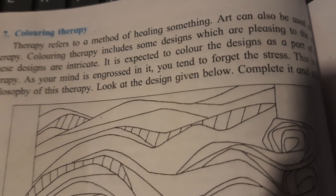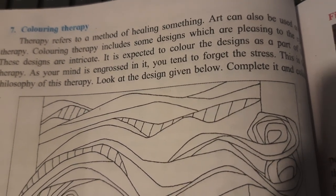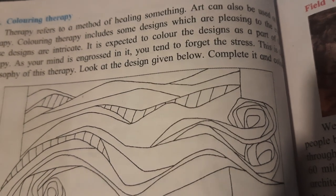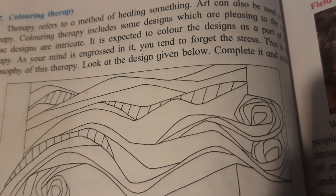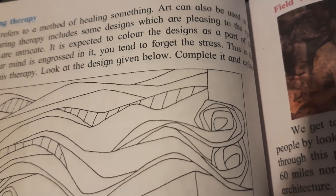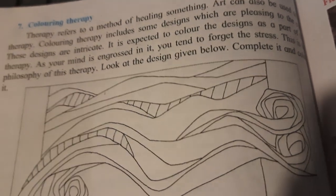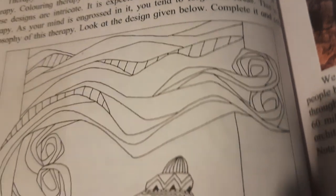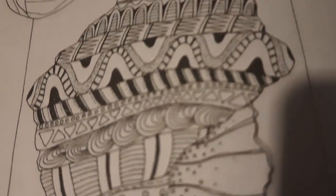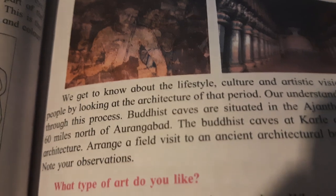Activity seven: coloring therapy — which you must have already done, playing with colours. Therapy refers to a method of healing something. Art can also be used as therapy. Coloring therapy includes some intricate designs — with many inside designs — which are pleasing to the eyes. It is expected to colour the designs as part of the therapy. As your mind is engrossed in it, you tend to forget your stress. Look at the intricate design given — while colouring it, you are forgetting your stress, whatever tension or problems you have. Thus it is a stress buster, or therapy.